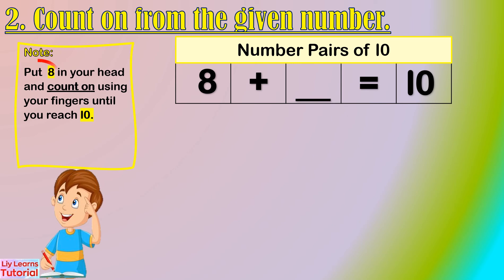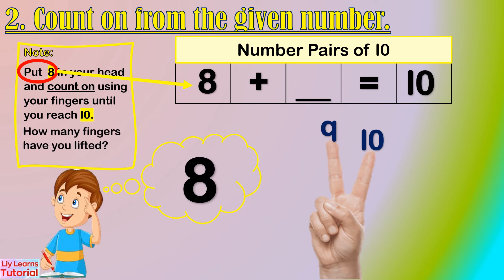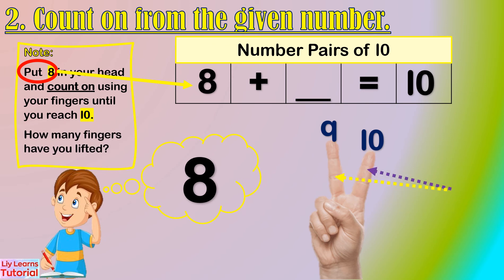Let's start from 8. Hold 8 in your head, then count on: 8, 9, 10. How many fingers have you lifted? 1, 2 — that's 2 fingers. So the number pair of 8 is 2.